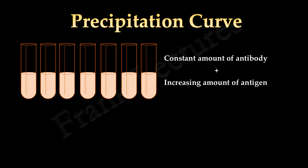Let's say this is a series of test tubes having a constant amount of antibody. In the next step increasing amount of antigens is added to these test tubes. After some time precipitate forms.